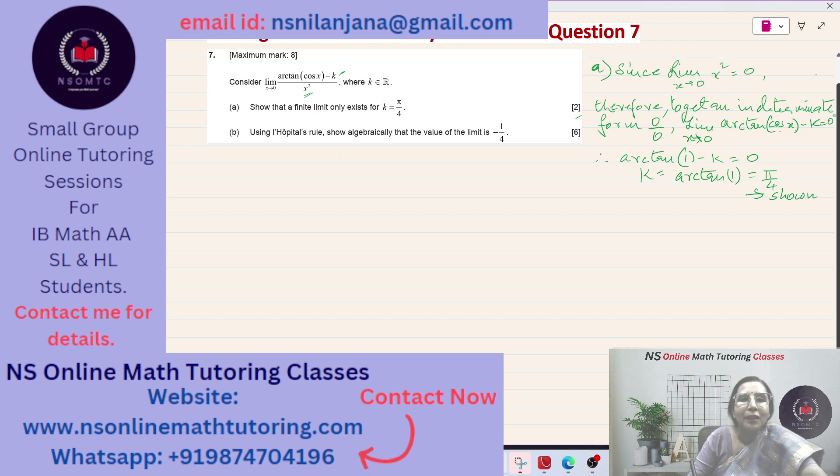Subpart B: Using L'Hôpital's rule, show algebraically that the value of the limit is negative 1 over 4. It contains 6 marks. Using L'Hôpital's rule and we have taken k to be equal to π over 4 so that we get a 0 by 0 indeterminate form.